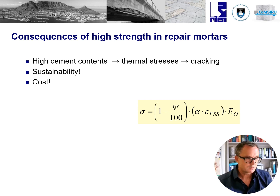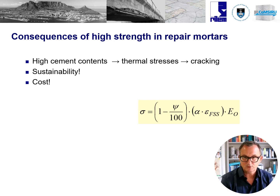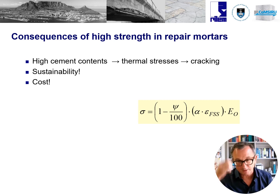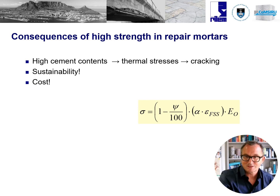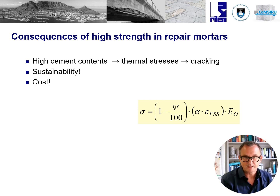Coming back to the misconception that we need high strength in patch repair mortars to improve performance: looking at the effects of a high cement content, which is needed for high strength, high cement contents increase early cracking due to hydration heat development. Many of these mortars are 40, 50, or 60 MPa strong, and lots of heat is developed, leading to substantial thermal cracking in typically quite thin patches, which adds to the long-term cracking due to shrinkage. High cement contents are also not sustainable, and these repair mortars are about 20 to 30 times more expensive than conventional concrete per cubic meter.